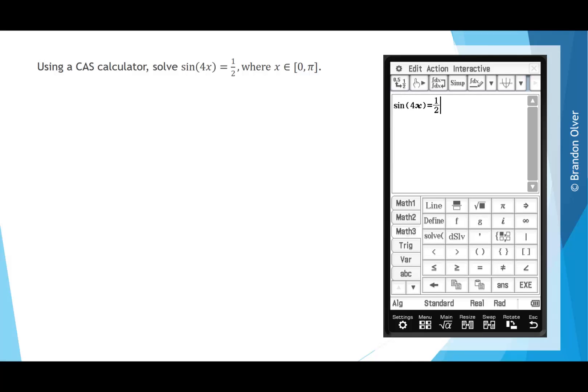If we go into math 3, you can see that there's this straight up and down line here in blue, and that allows us to restrict the domain for what we're solving. We want to put in between 0 ≤ x ≤ π.